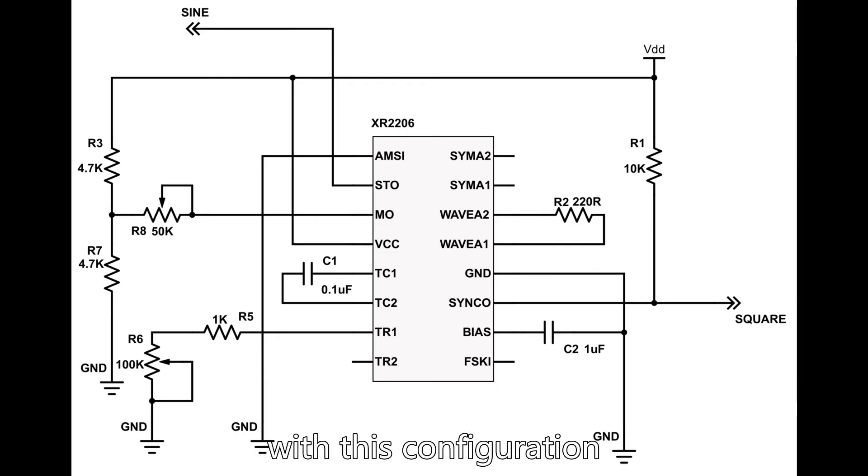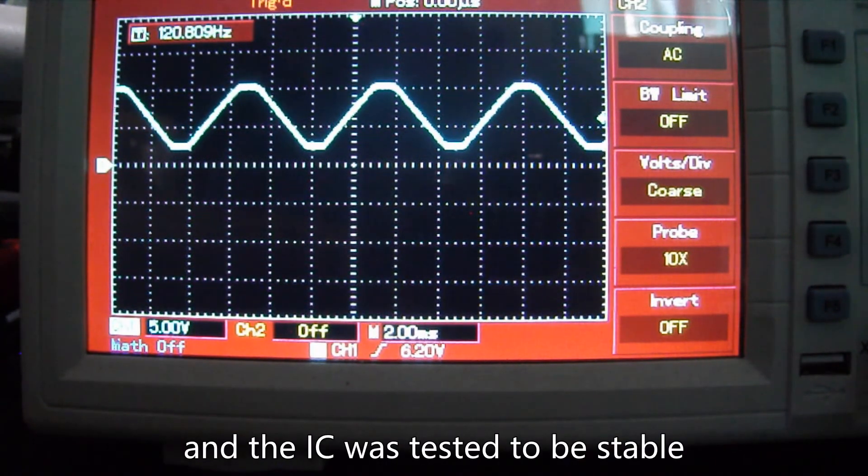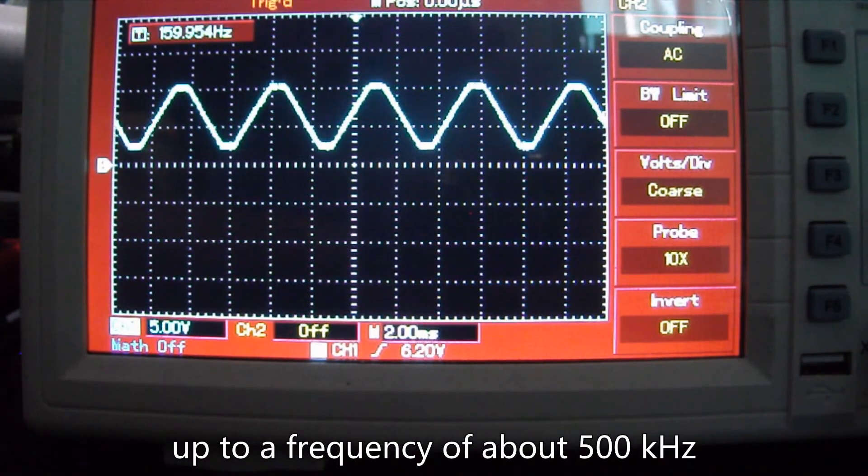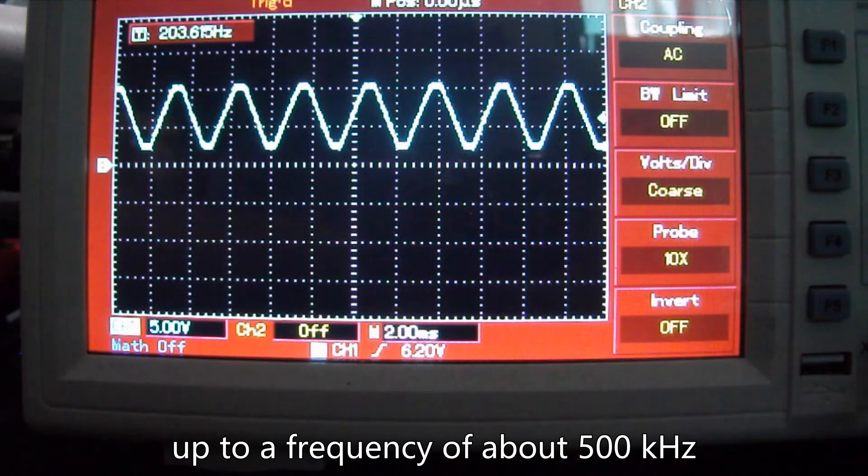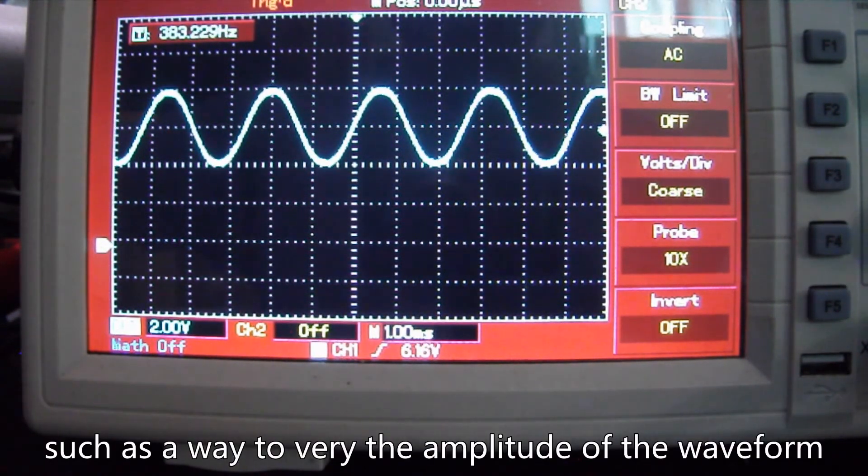With this configuration, we can obtain a frequency from 100Hz to about 10kHz and the IC was tested to be stable up to a frequency of about 500kHz. The IC has some useful features such as a way to vary the amplitude of the waveform.